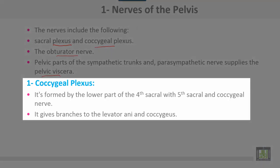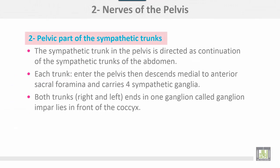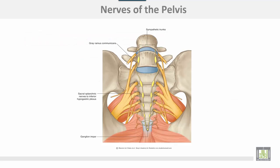The coccygeal plexus is formed by the lower part of the fourth sacral nerve, with the fifth sacral and coccygeal nerve. It gives branches to levator ani and the coccygeus muscle. The pelvic part of the sympathetic trunk descends as a continuation of the sympathetic trunk of the abdomen. Each trunk enters the pelvis and descends medial to the anterior sacral foramina, carrying four sympathetic ganglia. Both right and left trunks end in one ganglion called the ganglion impar, which lies in front of the coccyx.